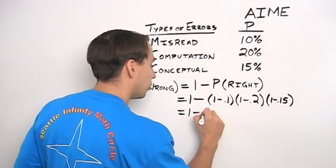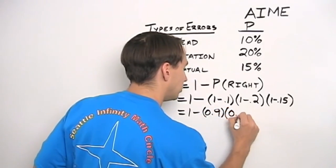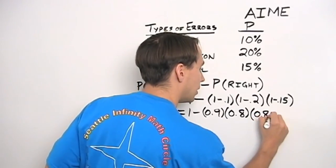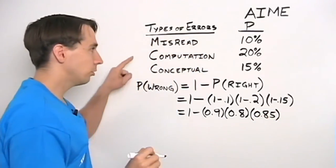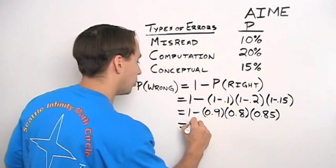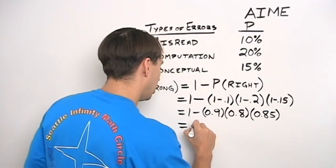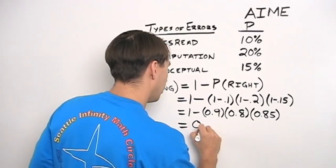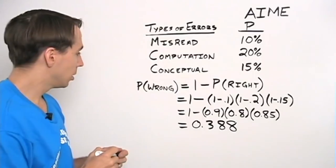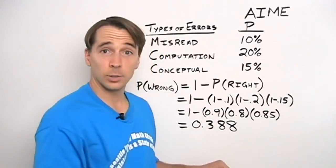This is just an arithmetic problem now. And when we work all this out very carefully, so that we don't make a computation error, we find out the probability that I'm wrong is 1 minus this product, which comes out to be 0.388. So the probability I'm wrong is almost 40 percent. That's not so good.